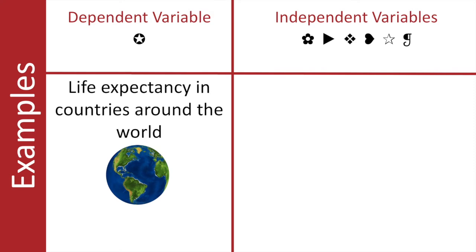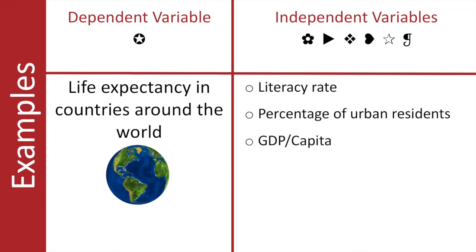So what could some of those factors be? I'm just brainstorming at this point, but perhaps literacy rate, percentage of urban residents, GDP per capita, population of the country, land area of the country. Okay, so I have a dependent variable now and some possible independent variables.